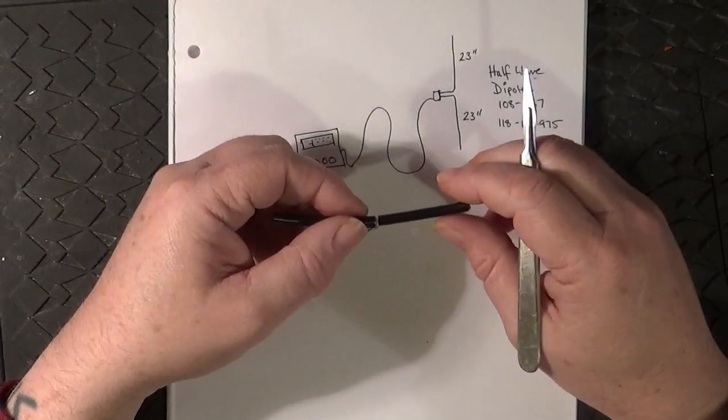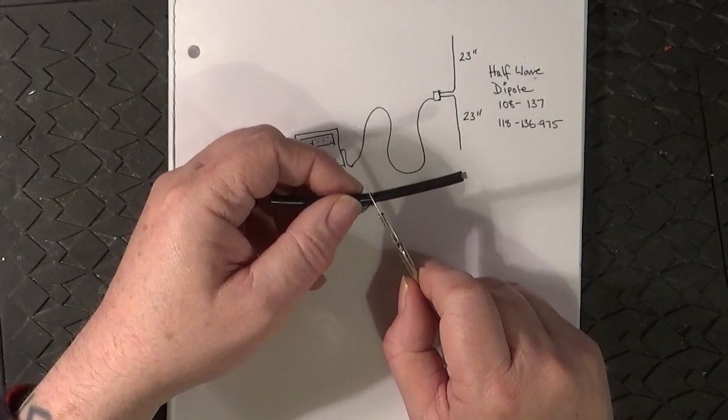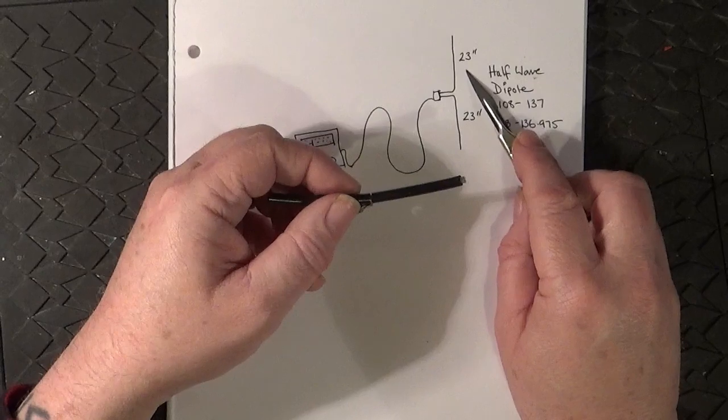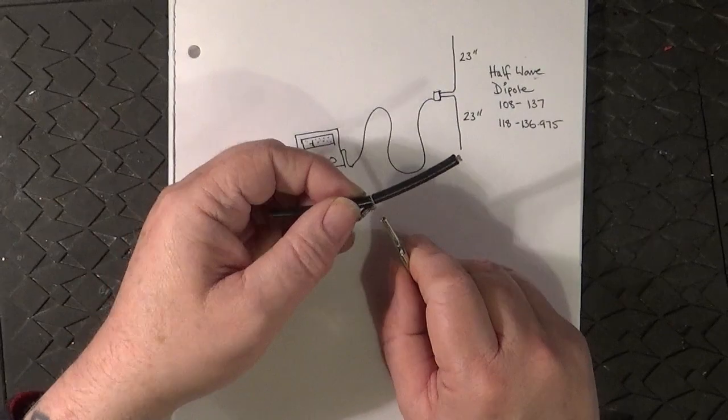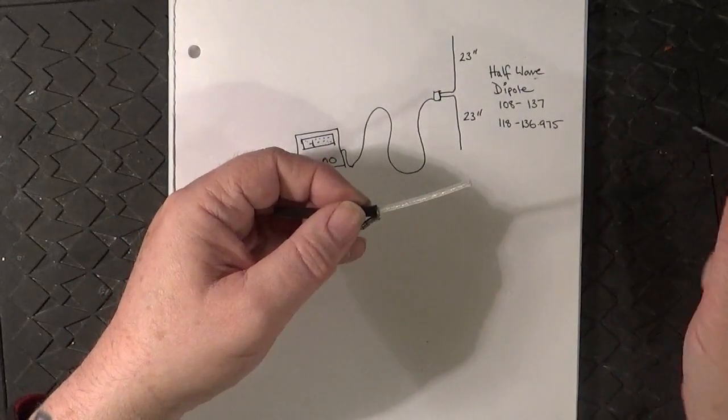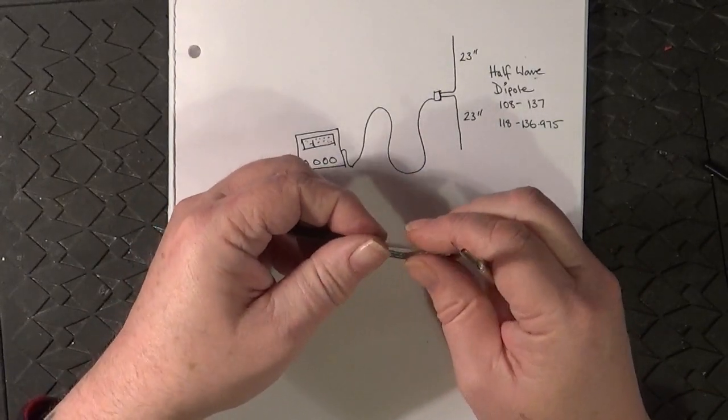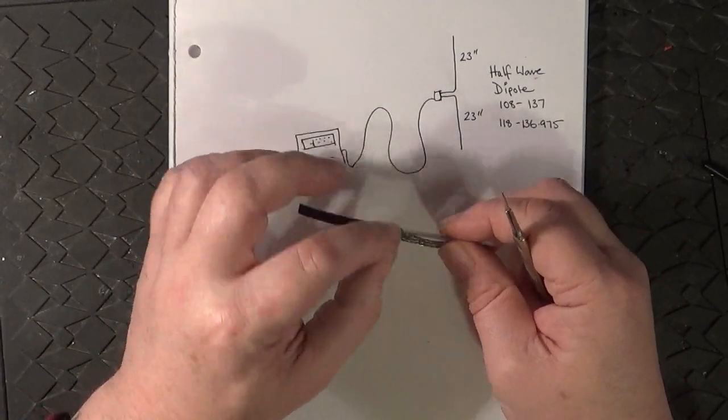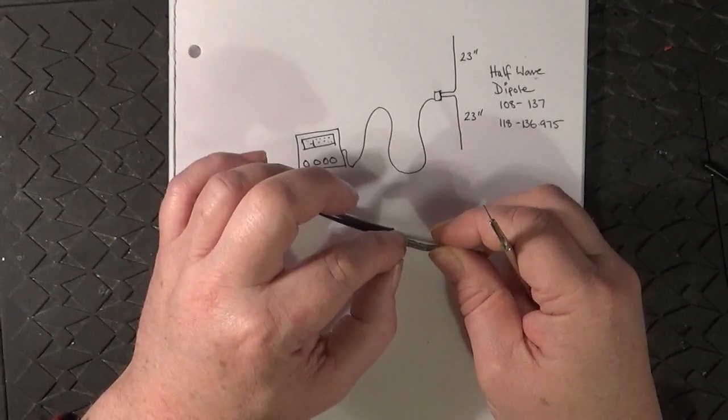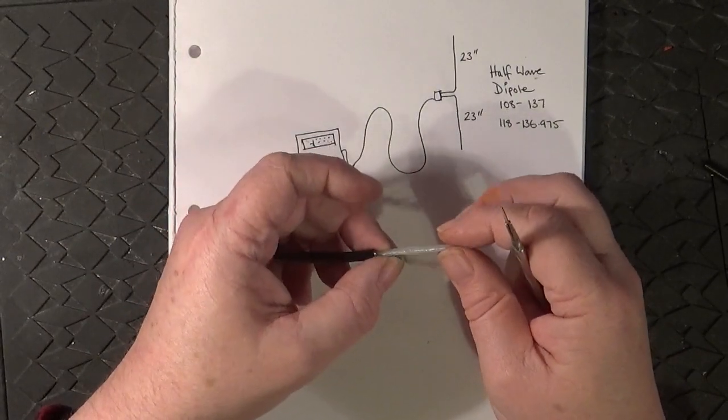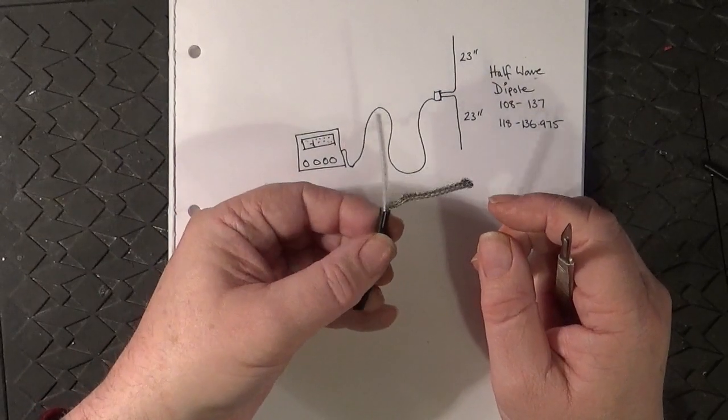All I've done on my RG58 to make the aerial is cut 10 inches back, or 23 inches if you're only listening to civilian aircraft. Remove the outer insulation layer, and you'll have the screen. Take a small screwdriver, lever apart the screen strands, and pull the inner core through the screen so you have something like this.